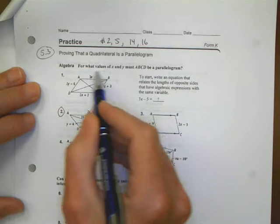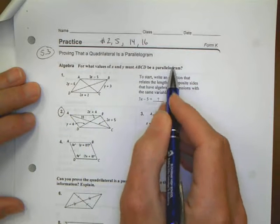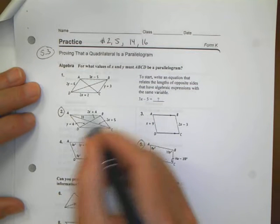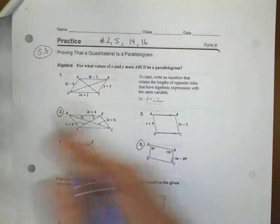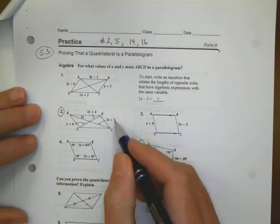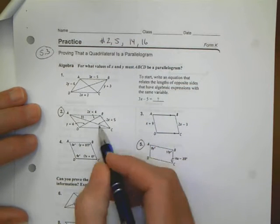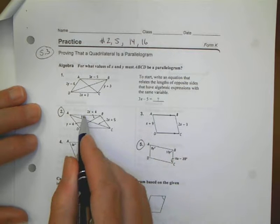It says here, Algebra for what values of x and y must ABCD be a parallelogram? We're going to start by trying to set some equations equal to each other. A couple things I look for are what's the easiest way to approach this problem.